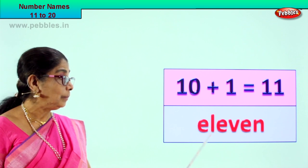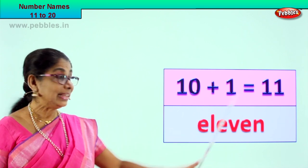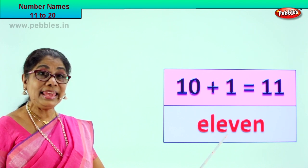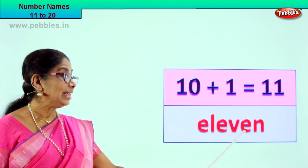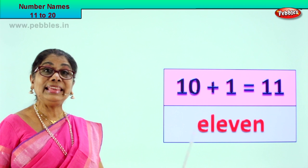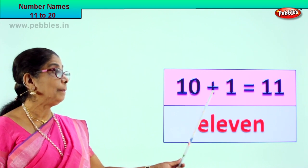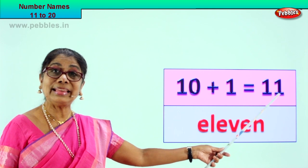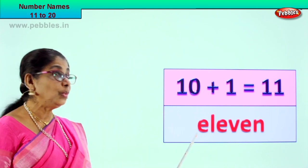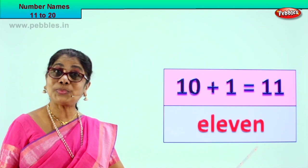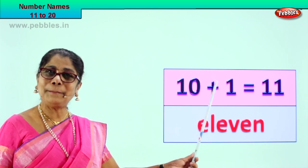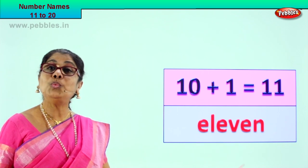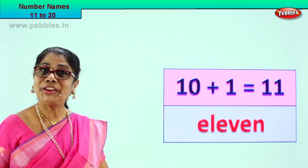Spell it again. 11 — E, L, E, V, E, N. 11. 10 plus 1 equal to 11. That is the number. How do you write in words? 11. And you learn to spell it. So this is the number, and here you learn to write the number 11 in words. 11. Good!